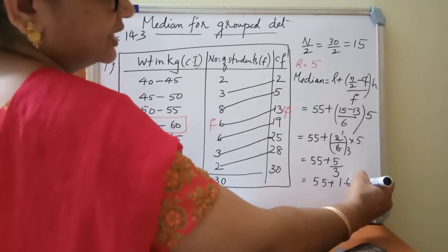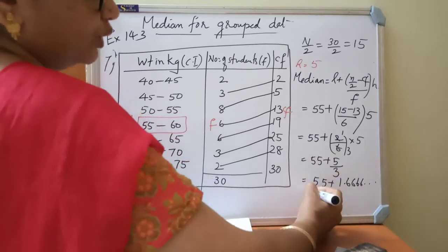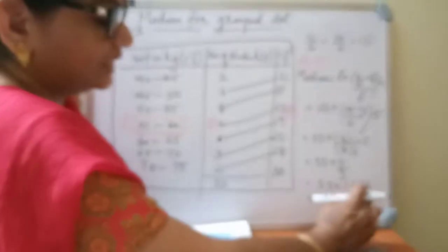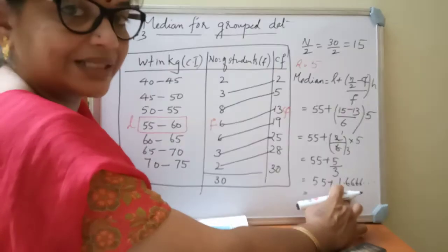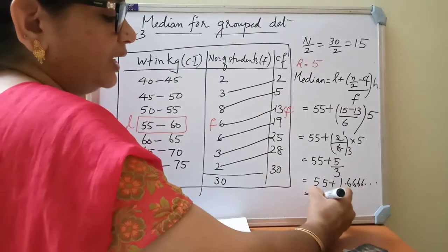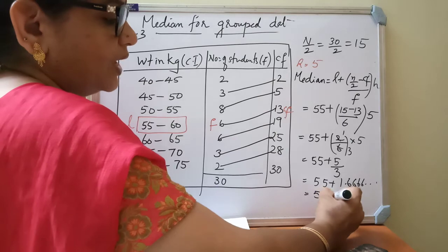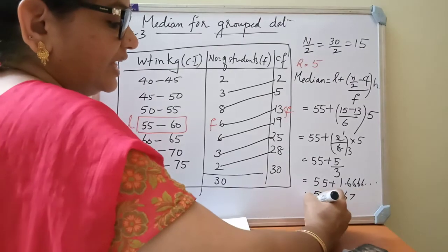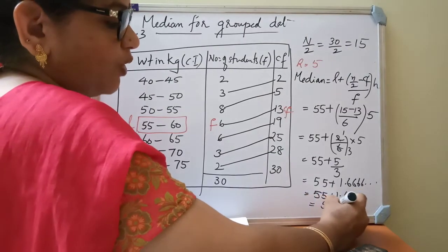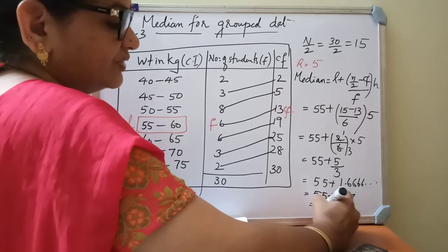Again reminder, 2 by 2, 6, 6, 6, like that it is coming. So if I am rounding off to 2 decimal places, this will come as 1.67. So 55 plus, 1.67.